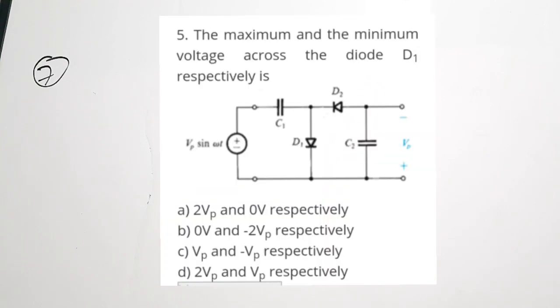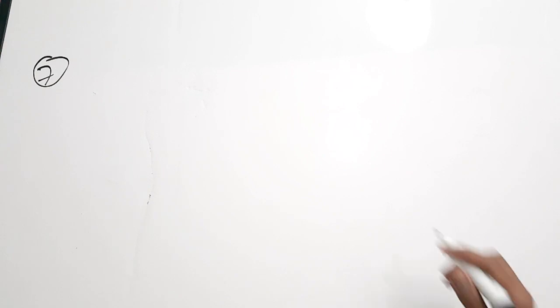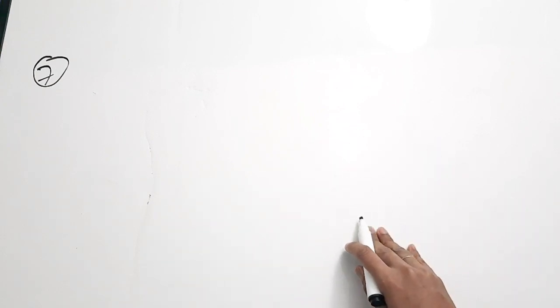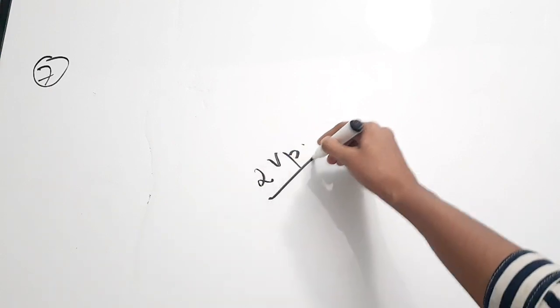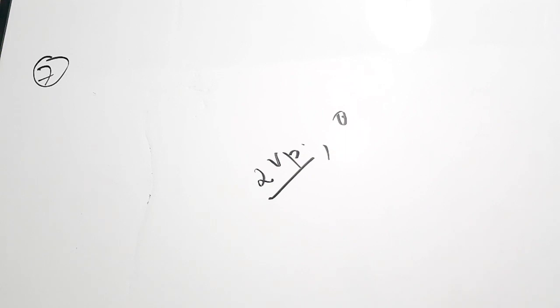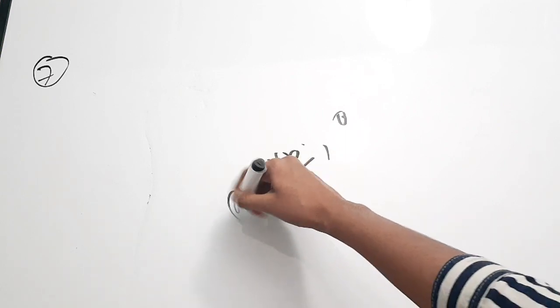The seventh question is from analog electronics. The maximum and minimum voltage across diode D1 is dash. There is a circuit with two diodes, two capacitors, and an input voltage. The given circuit is a voltage doubler circuit. A voltage doubler produces double the input voltage. If the input is Vp sin(ωT), the output maximum will be 2Vp and the minimum will be 0. Correct answer is option A: 2Vp and 0 volt.